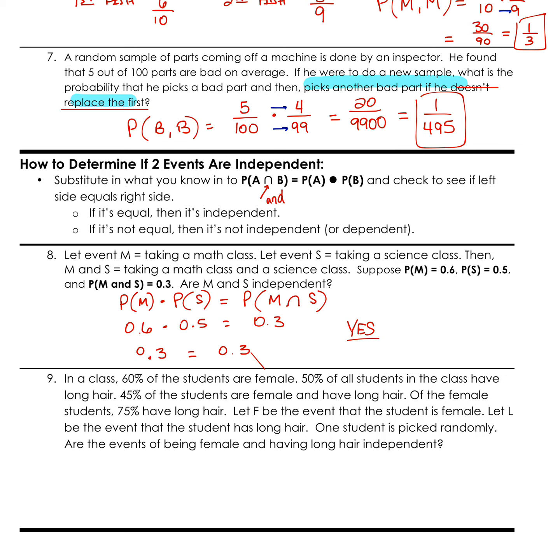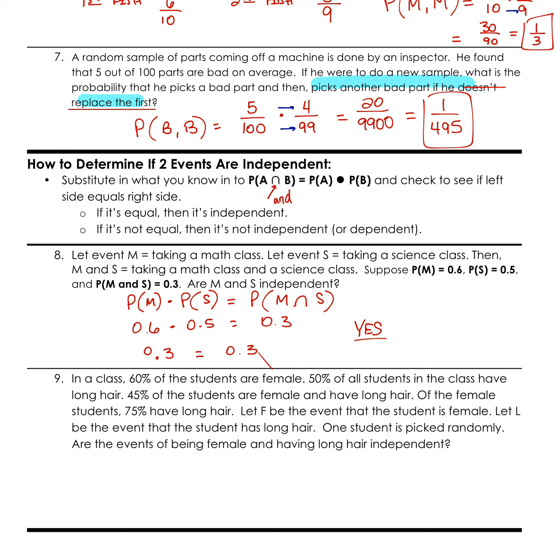And our last problem, we've got a class in which 60% of students are female. 50% of all students in that class have long hair. 45% of students are female and have long hair. Of the female students, 75% have long hair. Let F be the event that a student is female. L be the event that a student has long hair. One student is picked randomly. Are the events of being female and having long hair independent? So they threw a little bit of extra in here.